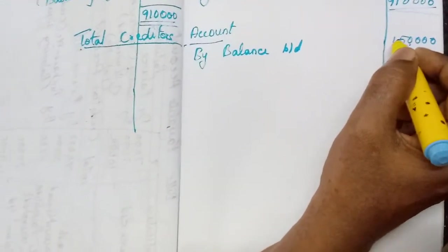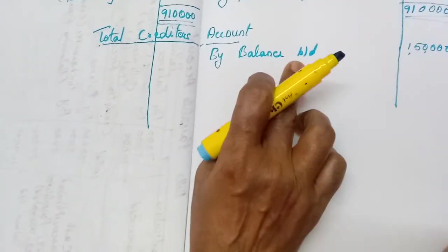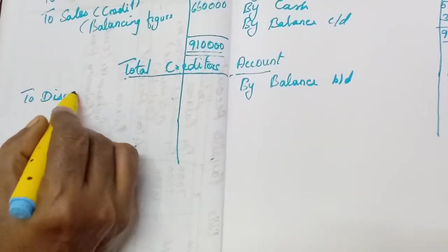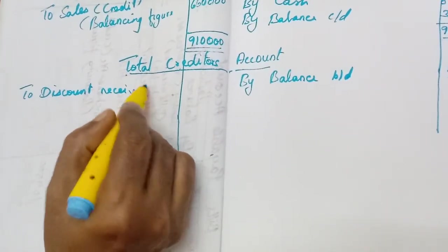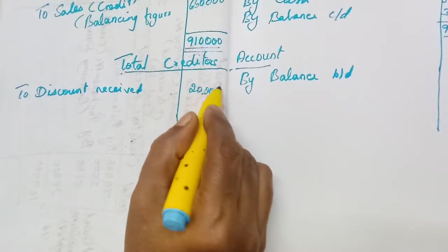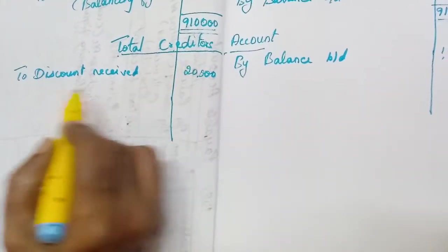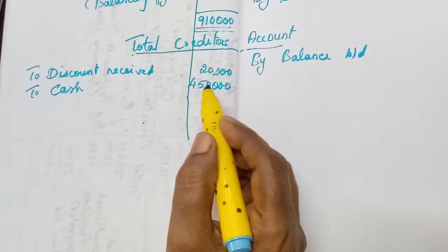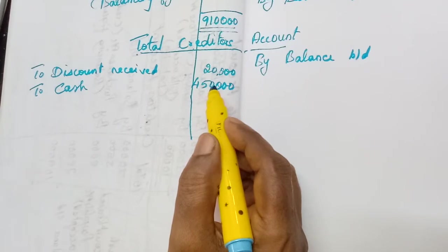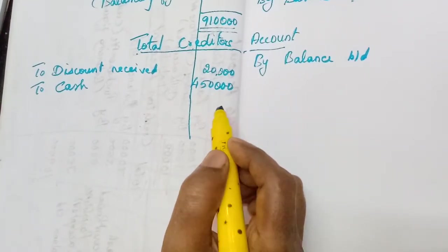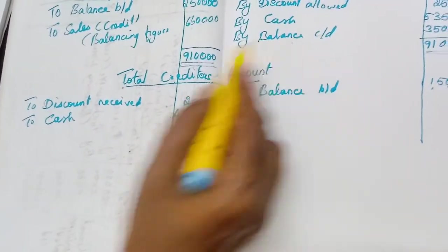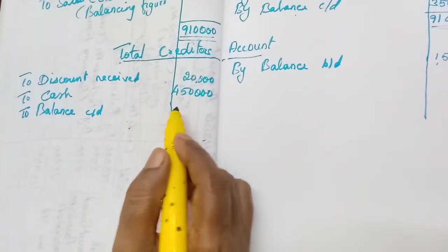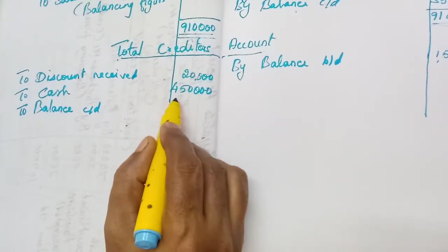Other details: drawings will not come. Discount received of 20,000 will come here on the debit side. Write 'To discount received: 20,000.' Cash paid to creditors — the entry is creditors account debit, to cash — so write 'To cash: 4,50,000.' Cash received from debtors and sundry expenses will not come. Now write the closing balance on the debit side: 'To balance carry down: 1,75,000' from the second column of the tabular data.